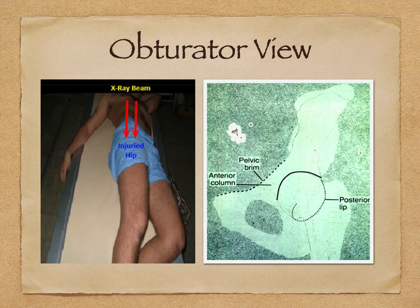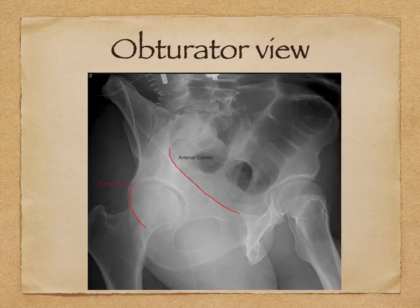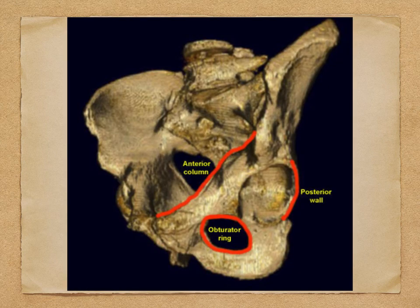There are two very important Judet views: the obturator view and the iliac view. In the obturator view, the patient is turned 45 degrees and you can clearly see the obturator foramen. These obturator views are very good to see the anterior column, identified by the iliopectineal line, and the posterior lip. On 3D reconstruction, you can clearly see the anterior column and the posterior wall along with the obturator ring.